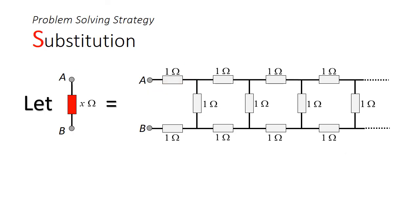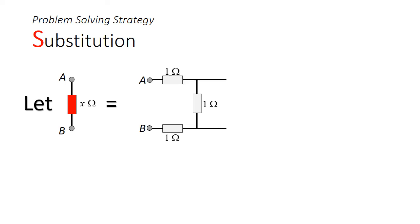The trick to this problem is once again to use substitution. We let the total resistance be X ohms. We can then keep the first ring of those three 1 ohm resistors and substitute the rest of the resistors with this red resistor of X ohms.